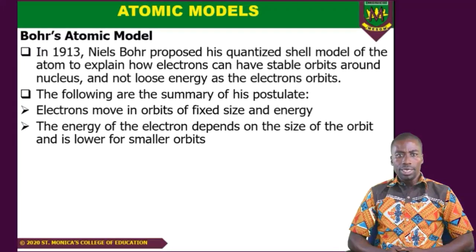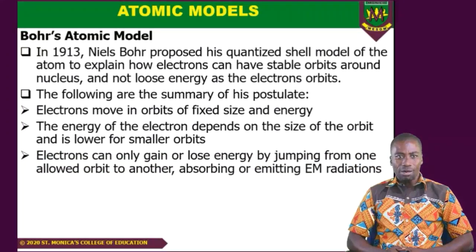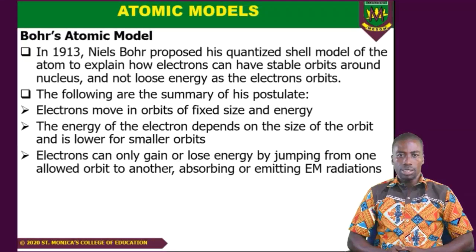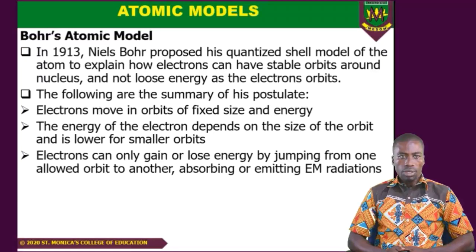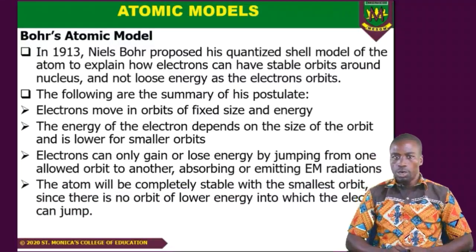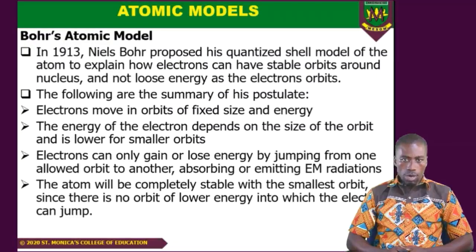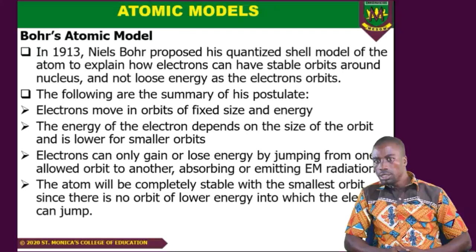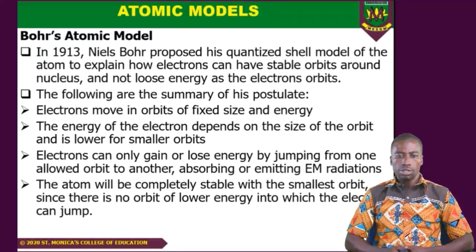Electrons can only gain or lose energy when they jump from one orbit to another, by absorbing or emitting electromagnetic radiation. You can't just lose or gain energy unless you are making a transition from one allowed orbit to another. The atom will be completely stable with the smallest orbit since there is no orbit of lower energy into which the electrons can jump.